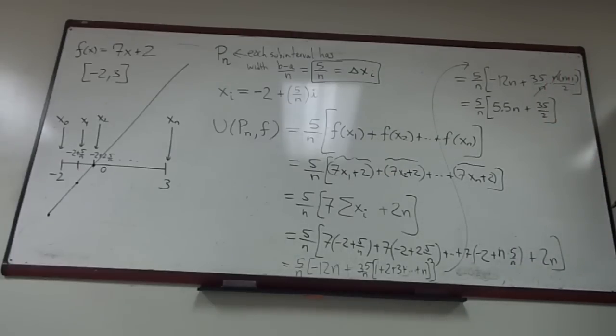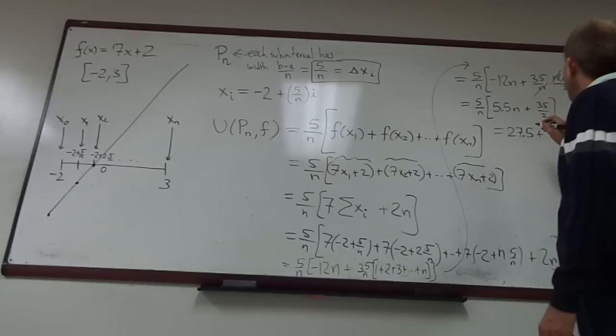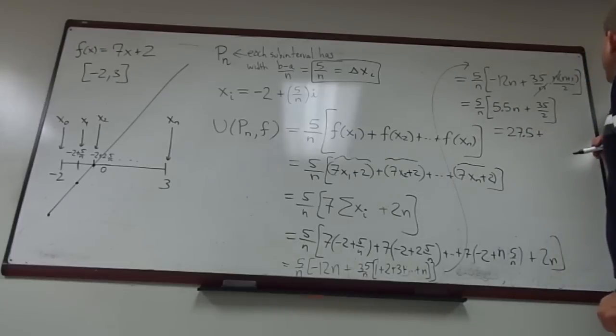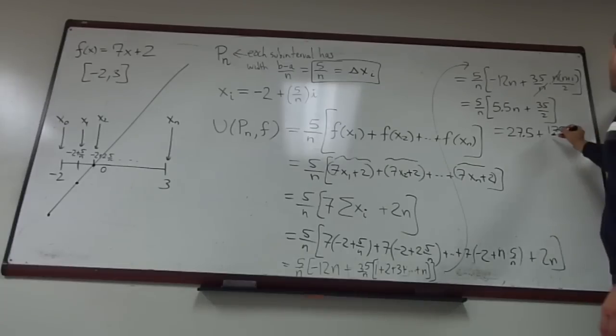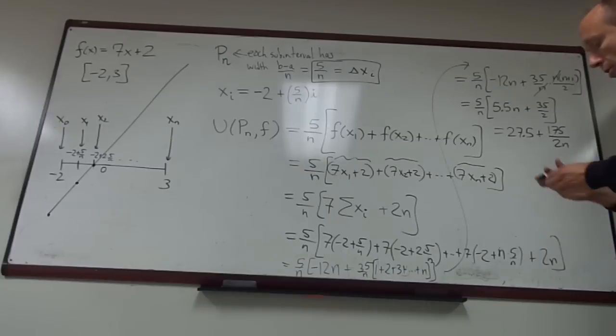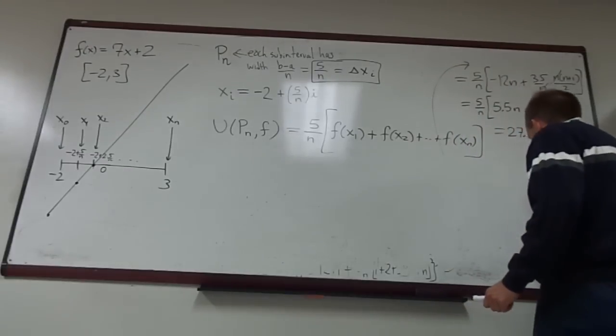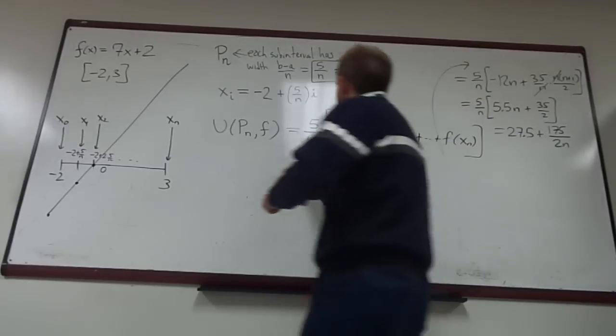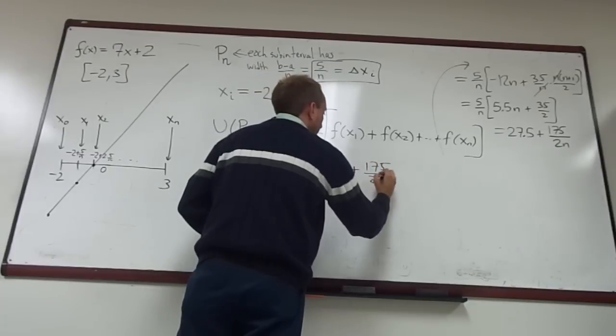So just make sure you check that arithmetic. And 5.5 times 5 is 27.5. Notice that the n's cancel right here. And then the second part of it is, well, 35 times 5 is 175 over 2n. So there's the formula, and that's the formula for U P n of f. So this turns out to be 27.5 plus 175 over 2n.